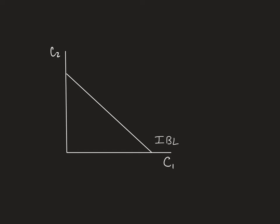First, let's talk about why this is linear. I'm going to take a random point right here where we have a combination. This is the amount of C1 and this is the amount of C2. So this is my amount of current consumption. This is my amount of future consumption.